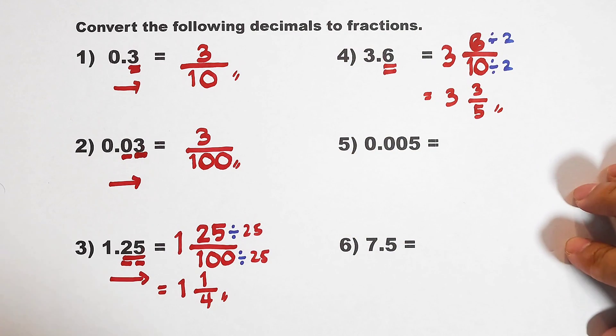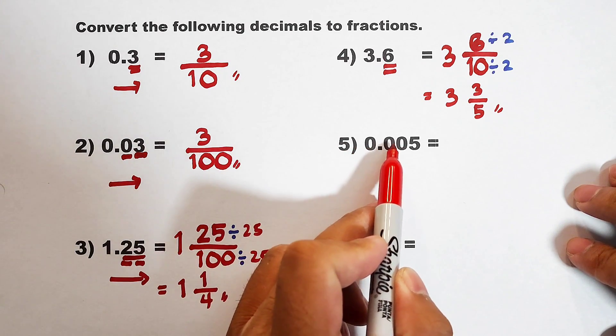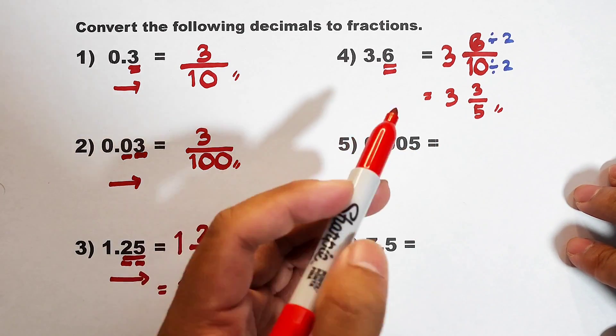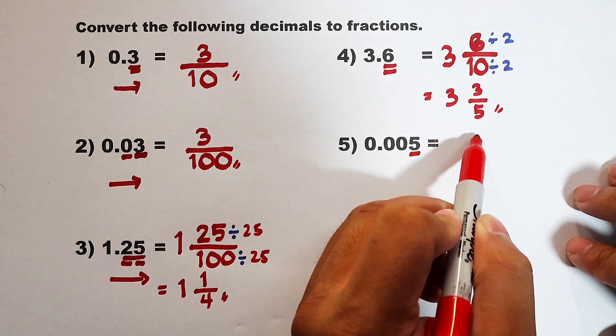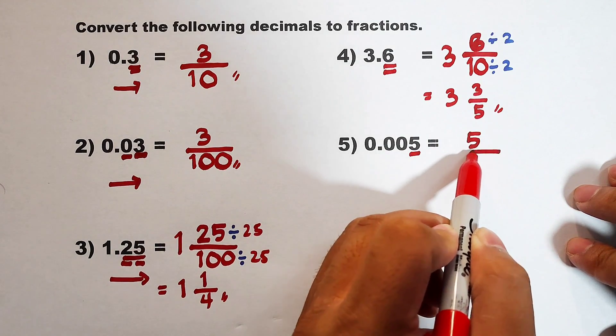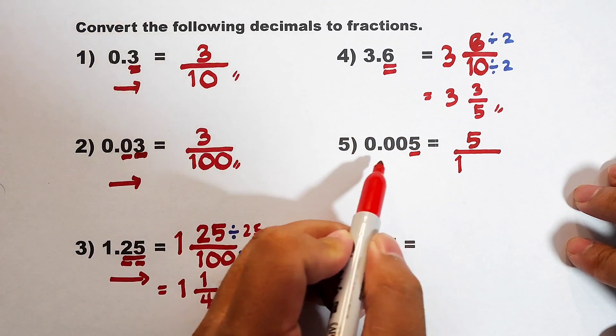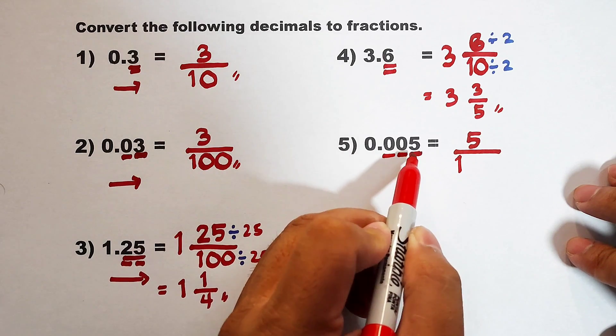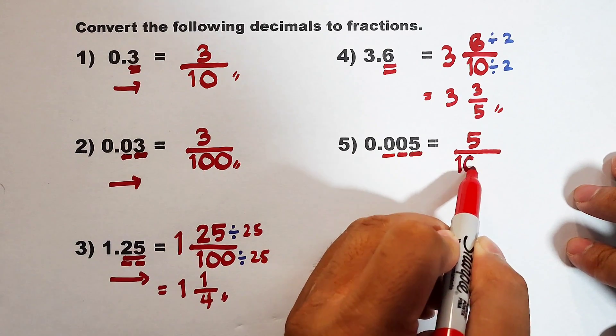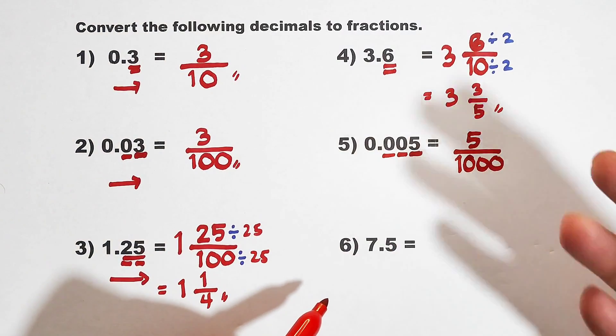Now let's continue with item number 5. For number 5, we are given 0.005. So what you need to do? Get this number. 5. You have your 5 here. Over. Put a 1 here. And then count the decimal places we have here. We have 1, 2, and 3. Meaning, we will add 1, 2, and 3 zeros. This one is not yet simplified.